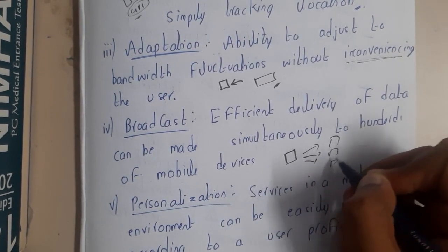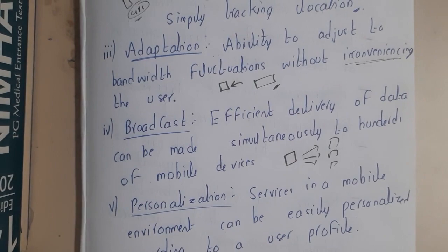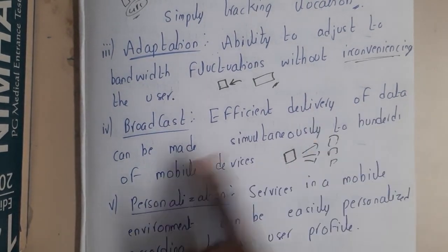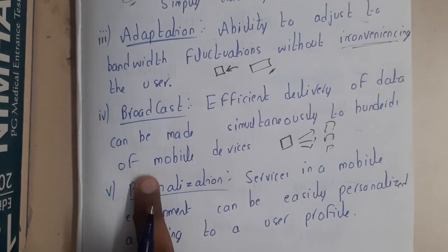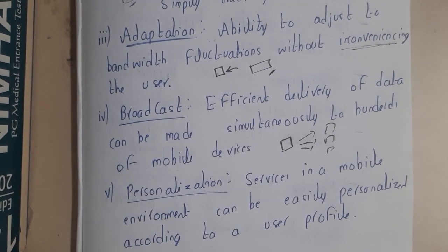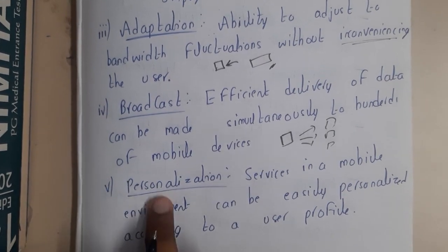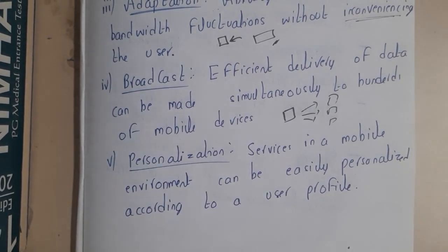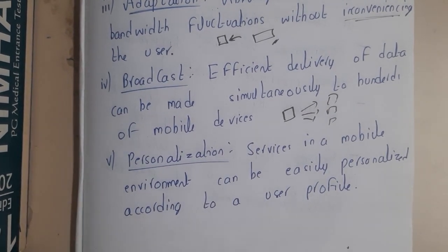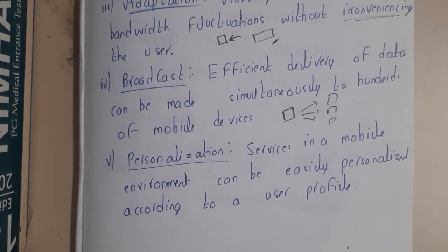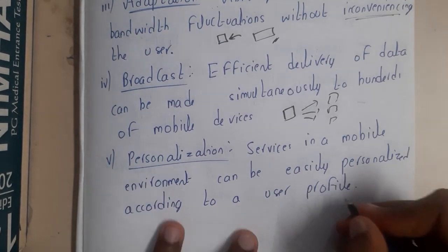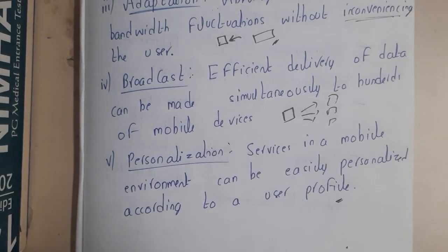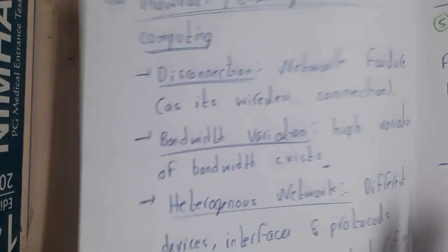Similarly, broadcasting — from your device you can send a particular message or information to multiple devices simultaneously. Efficient delivery of data can be made to hundreds or thousands of devices at once. Additionally, personalization allows you to have personalized services on your mobile — install apps, have your profile, and customize settings.